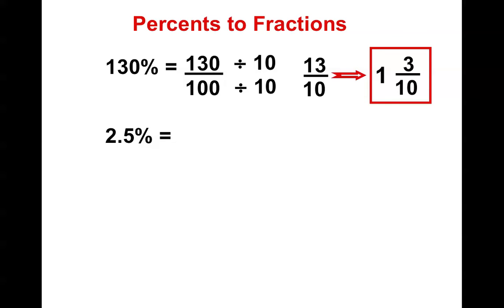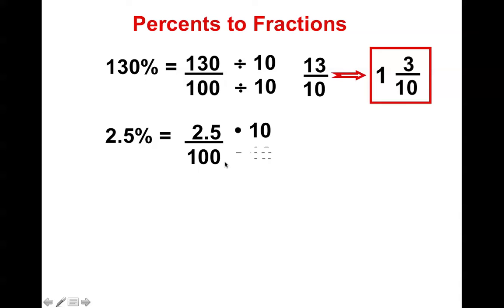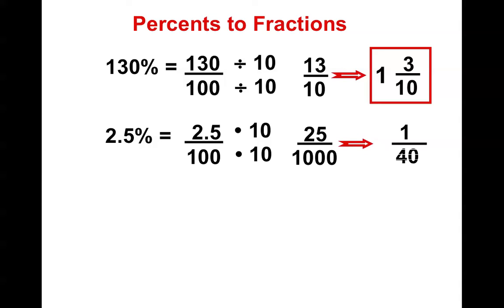2.5% — and you guessed it, over 100. However, there's the rule: no decimals allowed in a numerator or a denominator. Therefore, we need to be able to clear that decimal. We'll multiply by 10. I get 25 over 1,000. And can I simplify it? You bet — it becomes 1 over 40.